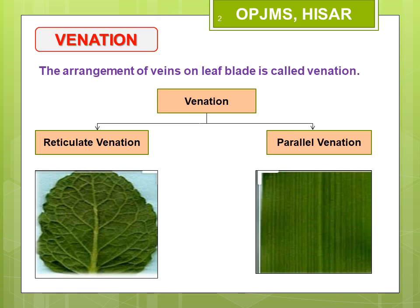Venation is mainly of two types: reticulate venation and parallel venation. Reticulate venation is the venation in which veins form a net-like pattern on both sides of the midrib. It is mostly present in plants having tap root system. The second type is parallel venation, in which the veins run parallel to the midrib or parallel to each other. It is present in plants with fibrous root system.